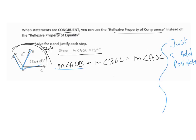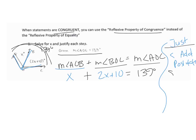Instead of writing measure of angle AOB, I'm going to write x. Instead of writing the measure of angle BOC, I'm going to write 2x plus 10. And instead of writing the measure of angle AOC, I'm going to write 139. So what I did was make a substitution — my justification is substitution. Next, do some algebra: 3x plus 10 equals 139. What I did right here is combined like terms or simplified.